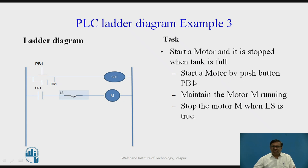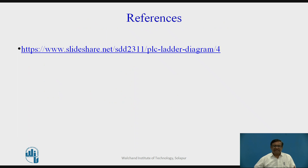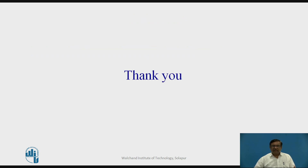To summarize example 3: start the motor by push button PB1, maintain motor M running, and stop motor M when the limit switch LS becomes open — meaning the tank is full. This way we can automatically control the operation of filling a water tank using this ladder diagram. References: this PowerPoint presentation was sourced from the internet for creating the slides.